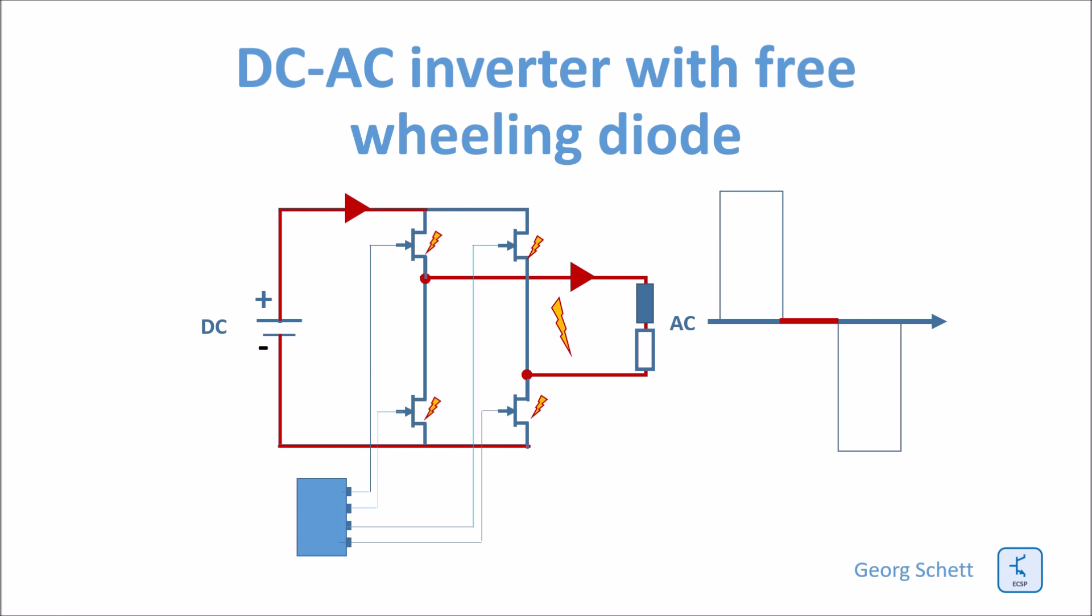In order to avoid overvoltages, freewheeling diodes are connected anti-parallel to the switches so the current can continue to flow. With the freewheeling diodes our switching sequence looks as follows.